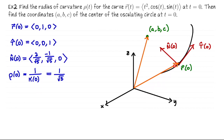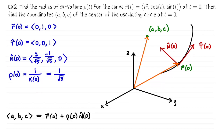We take r of 0, go from the origin to the point on the curve, and then do vector addition with a scaled version of N-hat. We place the tail of N-hat at the point and scale it toward (a, b, c). So we have r(0) plus the length of the radius times the N-hat vector. That's the general principle.